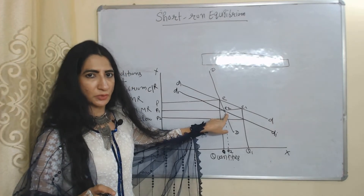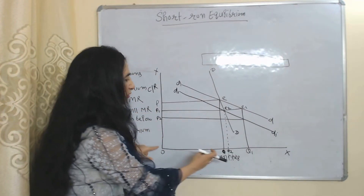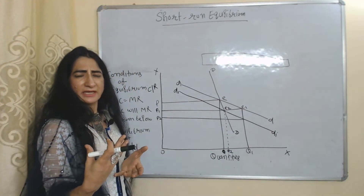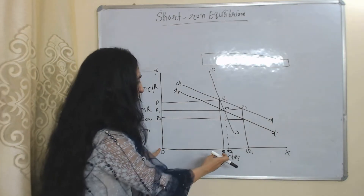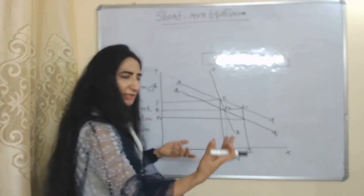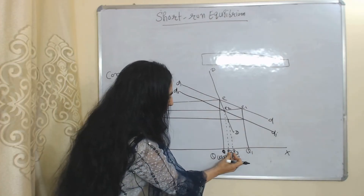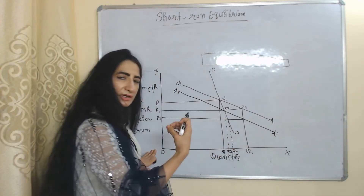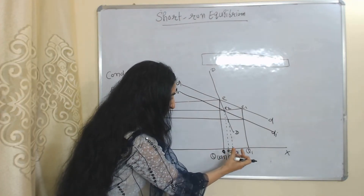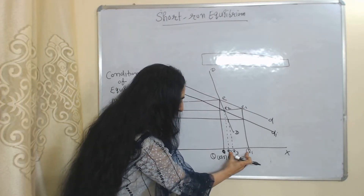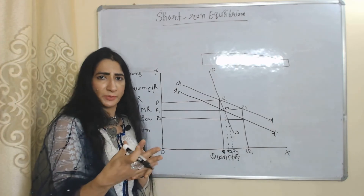At the new equilibrium point E2, the perceived demand curve shifts to D1D1, price is OP1, and quantity is OQ2. The seller again thinks that reducing price from OP1 to OP2 will increase demand from OQ2 to OQ1, but again actual market conditions differ — demand only increases from OQ2 to OQ3 because competitors also reduce their prices. So the seller is in price competition, continuously reducing prices.